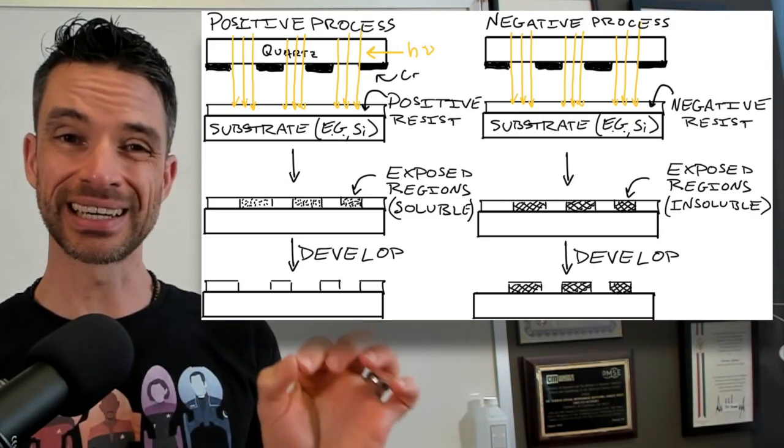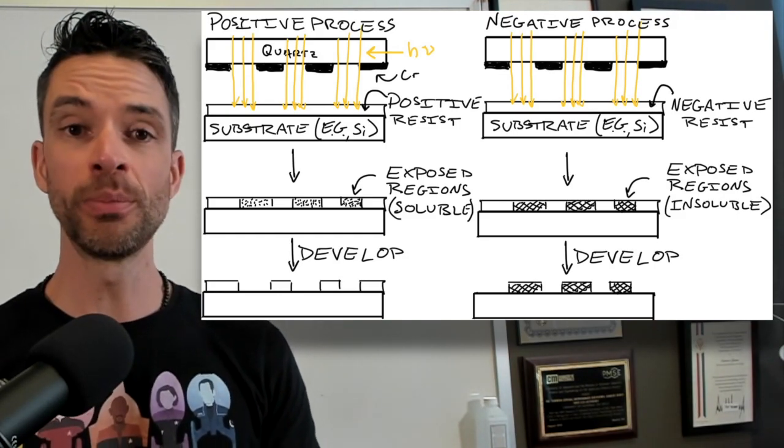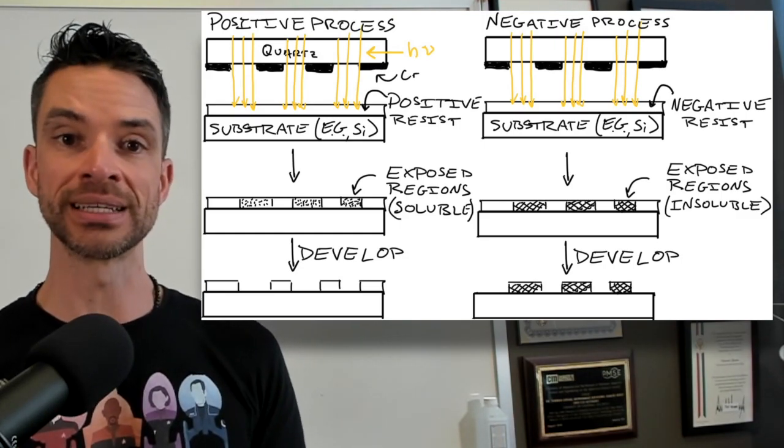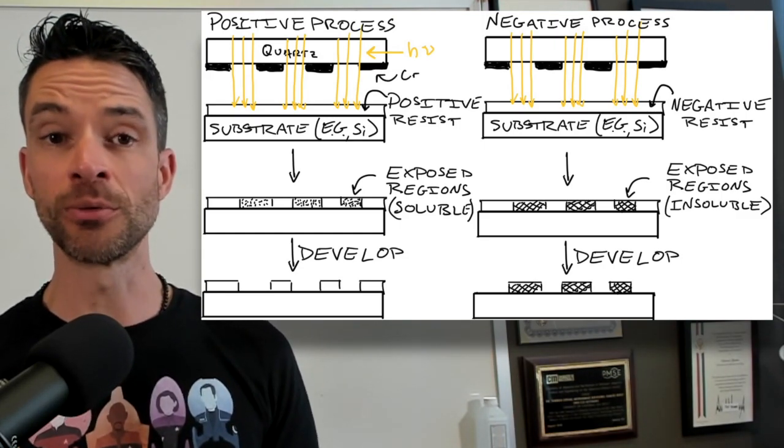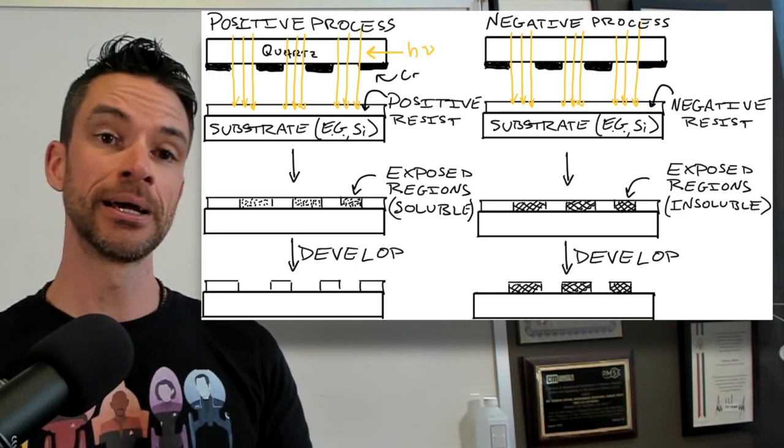In the photoresist that's sitting on the silicon that can be washed away. And thus the image or the openings in the photoresist film on the substrate match the image or the openings in the photo mask that you have made by electron beam lithography and thus mastering.